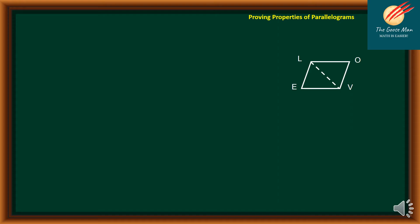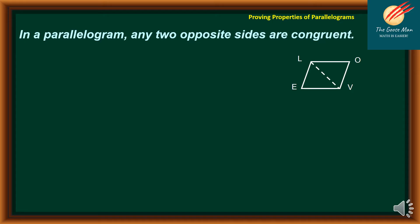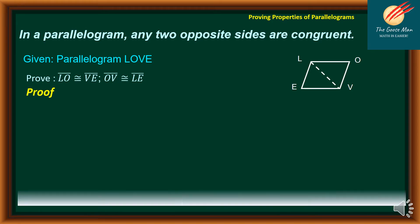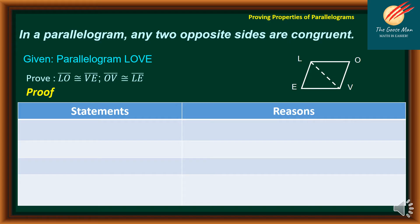So now let's move on to the first property of a parallelogram: in a parallelogram, the two opposite sides are congruent. Given parallelogram L-O-V-E, we would like to prove that line segment LO is congruent to line segment BE, as well as line segment OV is congruent to line segment LE. We will refer to the illustration on the right side. For our proof we need two columns: statements and reasons. For our first statement, we have parallelogram LOVE, and the reason is it is given.